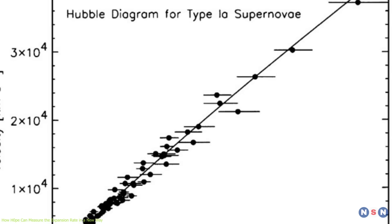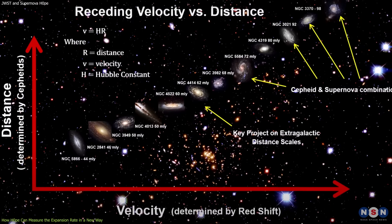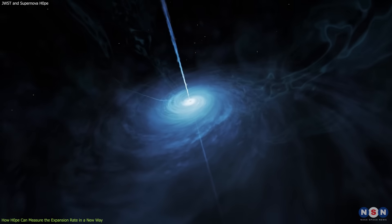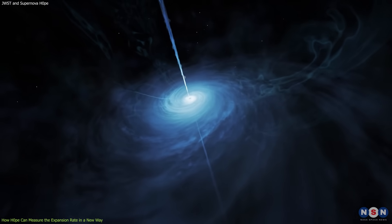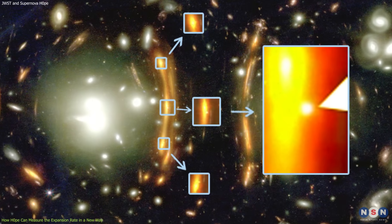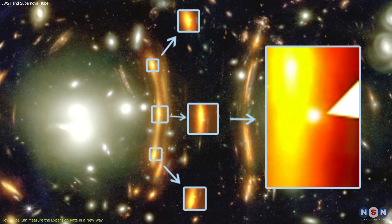And by knowing these distances, we can apply Hubble's law and calculate H0. This method has been used before with other lensed supernovae and quasars, which are very bright and active galaxies powered by supermassive black holes. But supernova H0P is special because it has three images instead of two, which gives more information and reduces uncertainties.